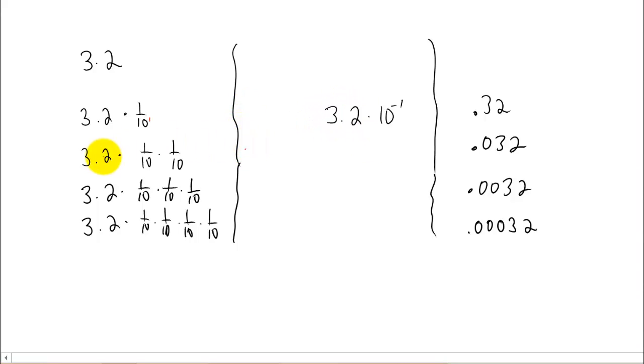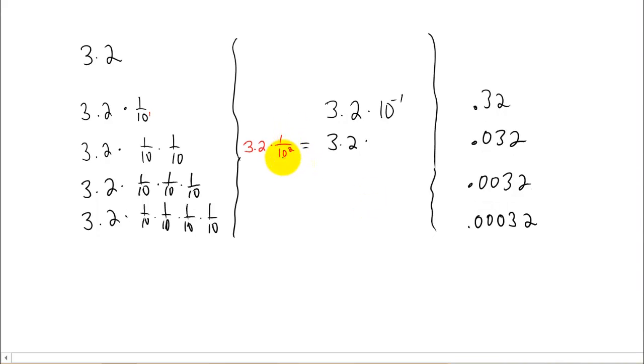Okay, let's look at the next line over. Let's copy the 3.2. 1 tenth times 1 tenth can be thought of as 1 over 10 squared. Using the same rule, I'm going to copy down the 3.2. Since the 10 squared is in the denominator, we can move that term up to the numerator and make the power negative. So 3.2 times 1 over 10 squared can be written as 3.2 times 10 to the negative 2 power.